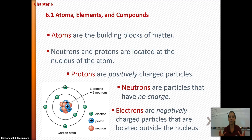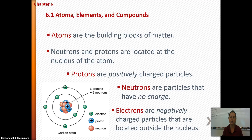In the outer shells of an atom you're going to have electrons, and those are negatively charged. Protons are the positively charged particles, while neutrons have essentially no charge. Take a second to pause and draw the atomic structure that shows protons, neutrons, and electrons.